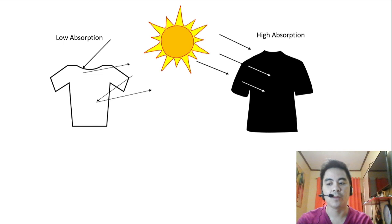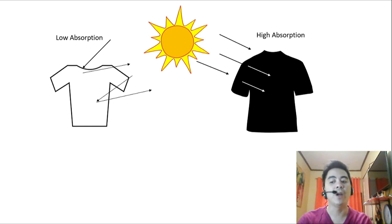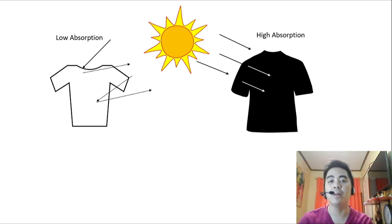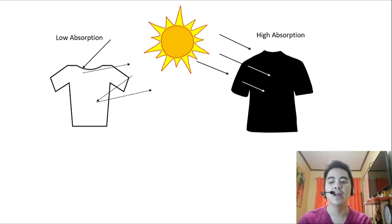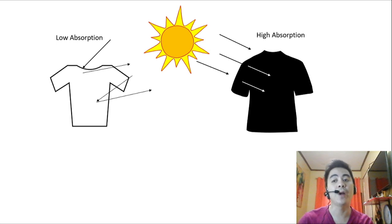When a colored fabric absorbs light, it turns the light into thermal energy. The more light the fabric absorbs, the more thermal energy it produces. The black fabric absorbs all the colors of light and is therefore warmer — when we wear black clothes during summer, it's very hot. The colors appearing darkest — like black, violet, indigo, and green or brown — will produce the most thermal energy. Colors like red, orange, and yellow will produce the least thermal energy, and they appear lighter or more like white.